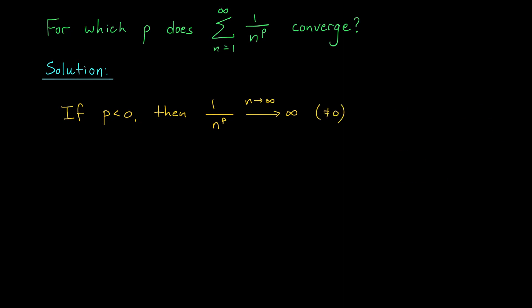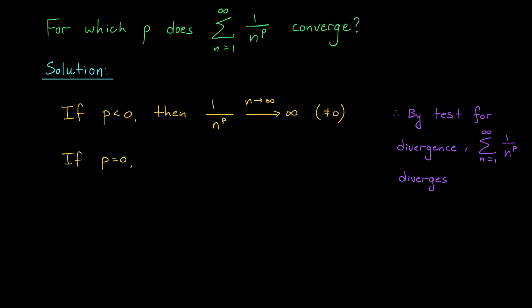Now there is one other situation where something goes horribly wrong, and that's when p equals zero. If p is zero, then the general term 1 over n to the p is just 1 over n to the zero, which equals 1. So our series is really 1 plus 1 plus 1 plus 1 and so on — and of course this series diverges. If p is 0, then 1 over n to the p always equals 1, so the terms tend to 1, not zero. By the test for divergence, this series diverges as well.